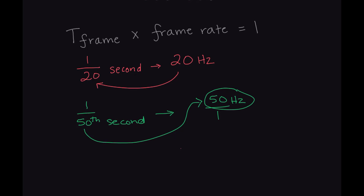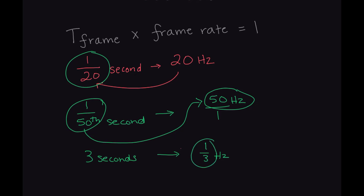As a tip: T-frame is always going to be some sort of decimal or fraction. If you have a T-frame of 3 seconds, that means we could only create a frame rate of 1/3 of a hertz, and that's not a valid value — you can't have a fraction of an event. So T-frame is always a time value, typically in seconds, and frame rate is always in hertz. Pay attention to your units.